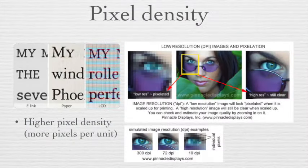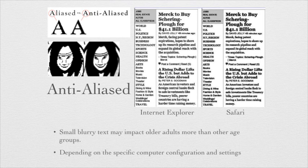Pixel density is measured in DPI. Higher pixel density means more pixels per unit area. Anti-aliasing is another factor — small, blurry text may impact older adults more than other age groups. Anti-aliasing depends on the computer configuration and settings.